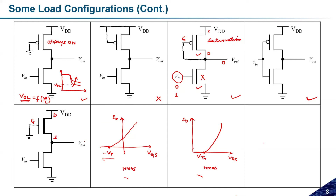If Vout is zero, then Vgs will be zero, and at Vgs = 0 this depletion transistor is in the on state. If Vout is VDD, then Vgs = −VDD, which is somewhere on the characteristics curve. Depending on the initial state, this transistor will be in the on state. Now I need to check the input and decide how this circuit behaves.